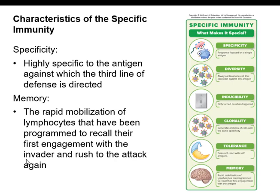The characteristics of specific immunity include specificity — the response is highly specific to the antigen against which the third line of defense is directed. Immune cells only respond to one particular antigen, which in a protein is typically just four or five amino acids long — a very small portion of the protein, not the whole thing.